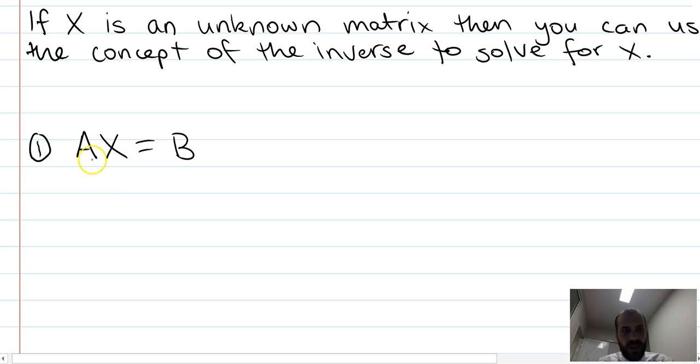Let's do it. Let's say you had an equation like this. A, which is a matrix, times x, which is our unknown matrix, equals b, some other matrix.